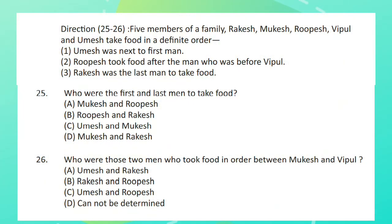Direction for questions 25 and 26. Five members of a family, Rakesh, Mukesh, Rupesh, Vipul and Umesh take food in a definite order. 1. Umesh was next to first man. 2. Rupesh took food after the man who was before Vipul. 3. Rakesh was the last man to take food.